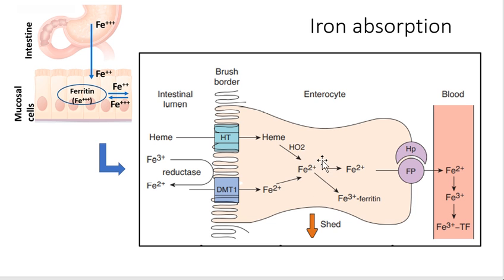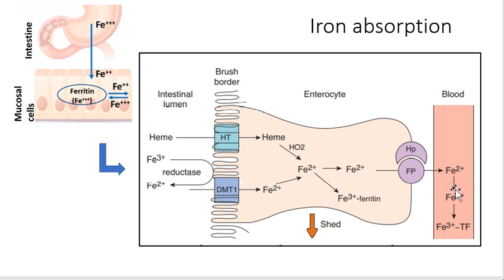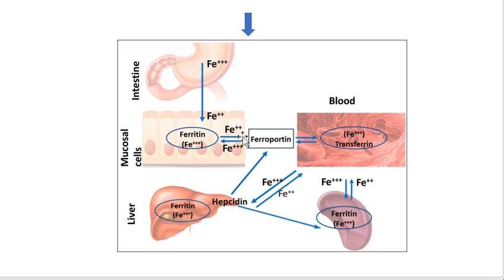If we are talking about heme iron, it can go directly into the cell as heme, and then Fe²⁺ is released inside. This Fe²⁺ (ferrous) iron is then transported to the blood by ferroportin, which is a transport protein that helps transport Fe²⁺ to the blood. It is then converted back into ferric form and binds with transferrin, the transport protein in blood, which helps transport iron to other tissues.